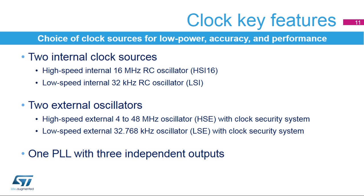STM32G0 devices embed two internal clock sources: a high-speed internal 16 MHz RC oscillator, or HSI-16, and a low-speed internal 32 kHz RC oscillator, or LSI. They also embed two oscillators for use with an external crystal or resonator: a high-speed external 4 to 48 MHz oscillator, or HSE, with a clock security system, and a low-speed external 32.768 kHz oscillator, or LSE, also with a clock security system.